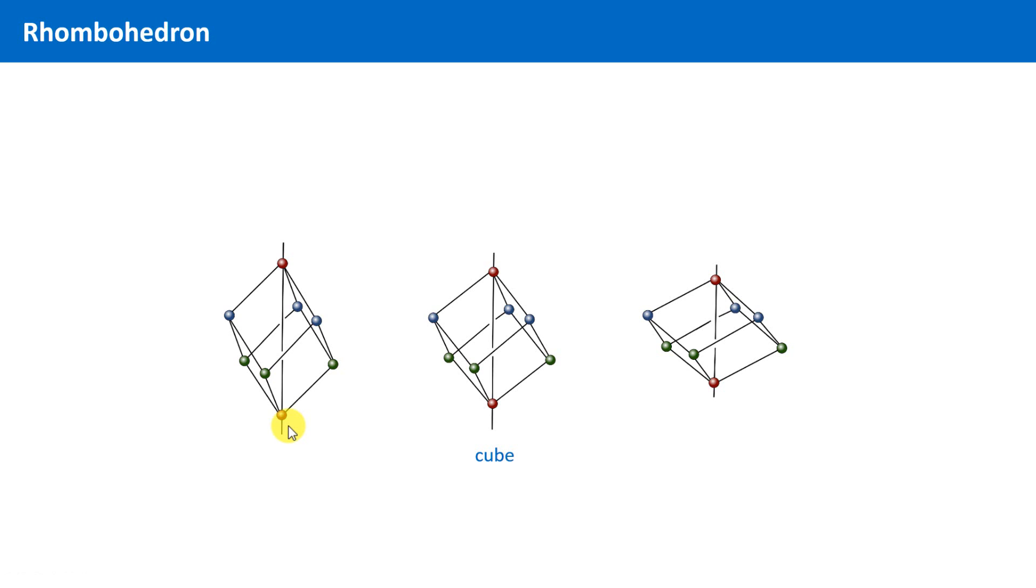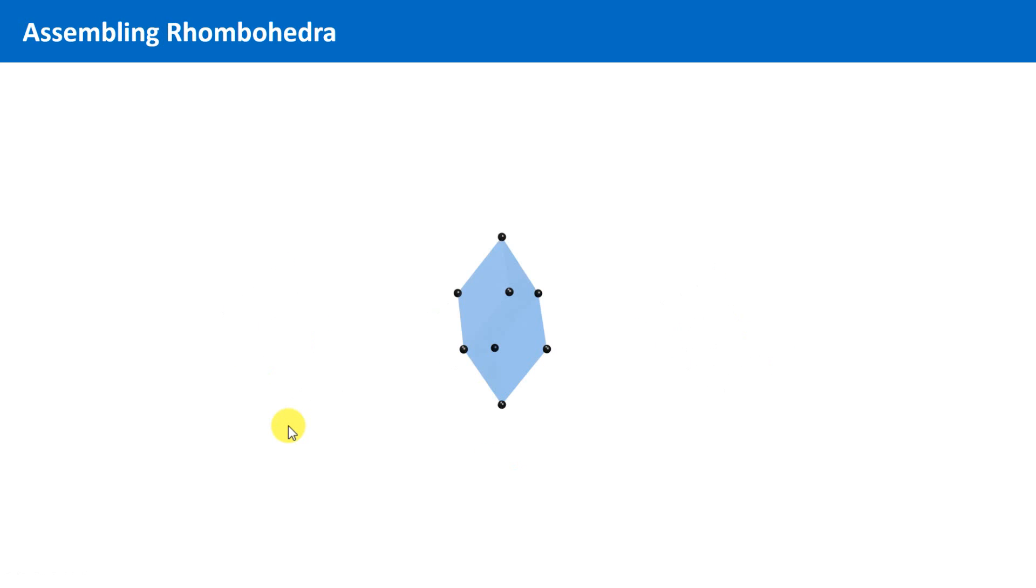A rhombohedron is of course a parallelepiped. And it is completely space-filling if we assemble them together face by face, as you can see here in this small animation.